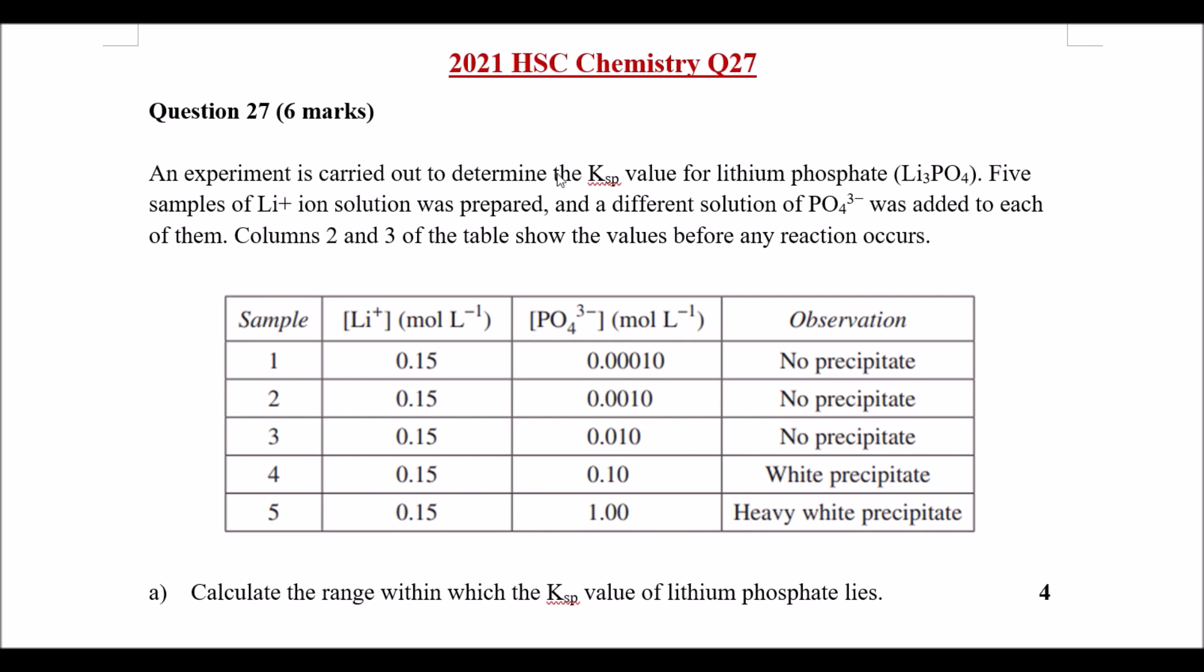We have an experiment to determine the Ksp value for lithium phosphate. There were five samples of lithium-ion solutions prepared and a different solution of phosphate was added to each of them. Column 2 and column 3 of the table shows the values before any reaction occurs. We can see from the observations sample 4 and sample 3 was where we had a strong precipitation occurring.